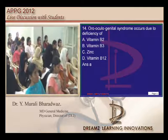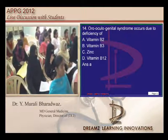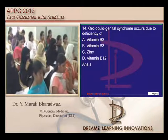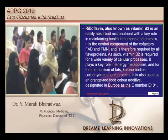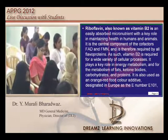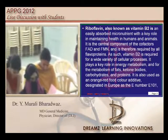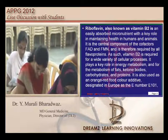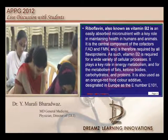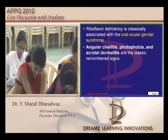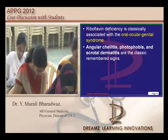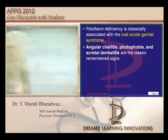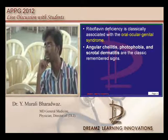Oro-oculogenital syndrome is basically caused by riboflavin — vitamin B2 — which is classically associated with the oral-ocular-genital syndrome. Angular cheilitis and scrotal dermatitis are the components of the oral-genital involvement of vitamin B2 deficiency that need to be remembered.